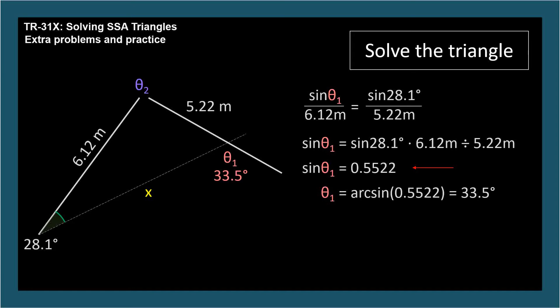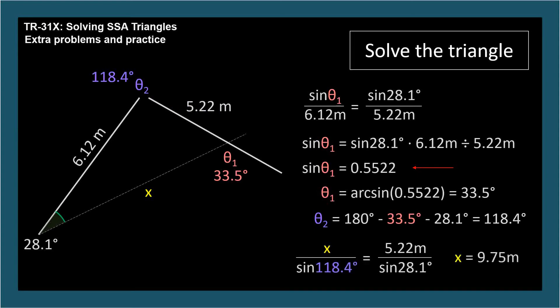Now that we know two angles, we can find the third by subtracting from 180 degrees. Theta 2 equals 180 degrees minus 33.5 degrees minus 28.1 degrees, so 118.4 degrees. Now we just need to find x using the law of sines. We get 9.75 meters, and without much effort, we found the first solution.